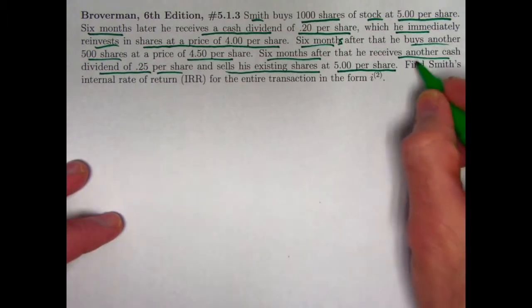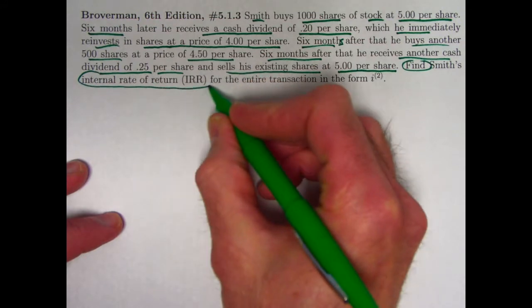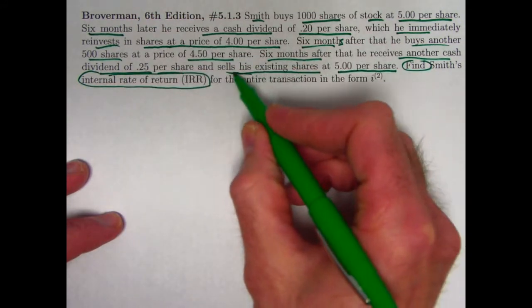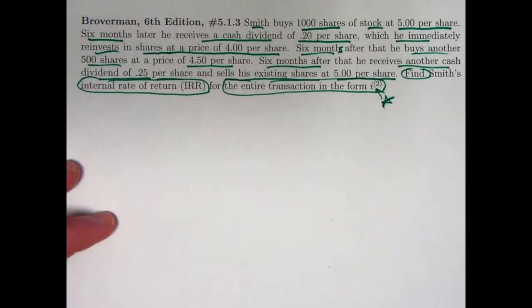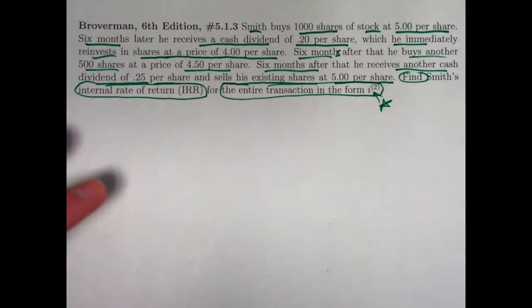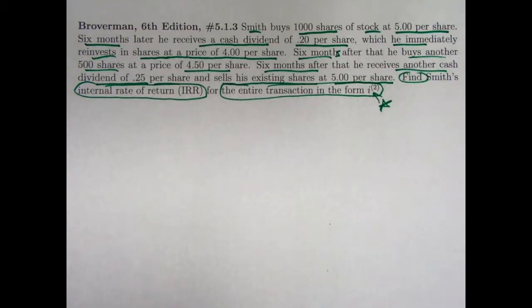Six months after that he buys another 500 shares at 4.50 per share. Finally, six months after that, he receives another cash dividend of 0.25 per share and also sells all of his existing shares at 5 per share. The goal is to find Smith's internal rate of return for the entire transaction in the form I-2 as a nominal annual yield rate, though in the back of the book the answer is given as J, the effective semi-annual return. We will find both—we'll find J and also double it to find I-2.